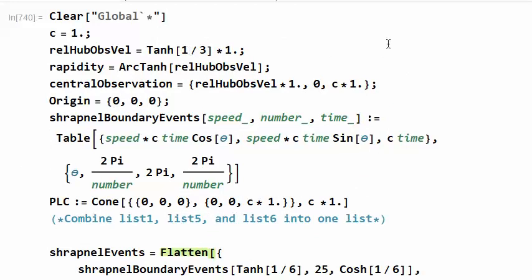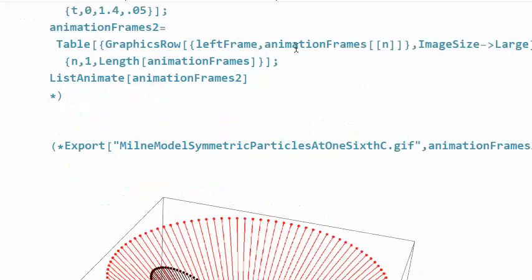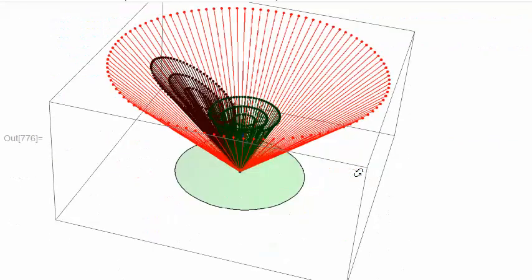I guess we could apply the Lorentz transformation to the shrapnel events first, which is convenient because the LT matrix is centered on the origin of this description. And then move the origin by adding x and t values to put it at that point right there. You could also add y values to it if you wanted to have off-center explosions. But for now, I just kind of wanted to make sure that I had this part set up right, and change the rel hub observed velocity to two-thirds, so we have that.